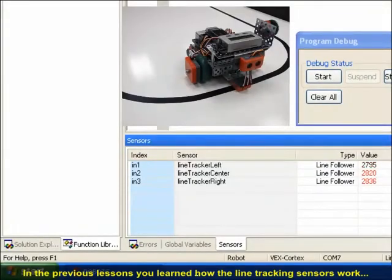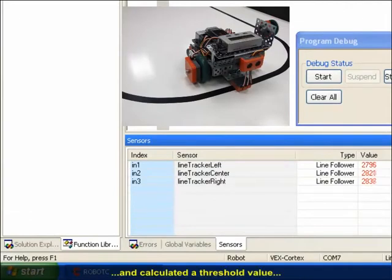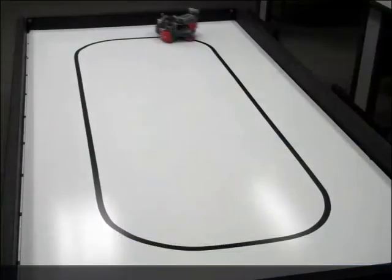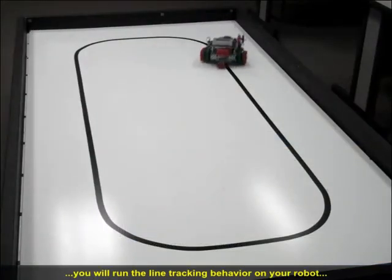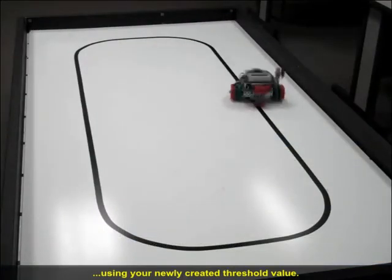In the previous lessons, you learned how the line tracking sensors worked and calculated a threshold value to allow the robot to distinguish light from dark. In this lesson, you will run the line tracking behavior on your robot using your newly calculated threshold value.